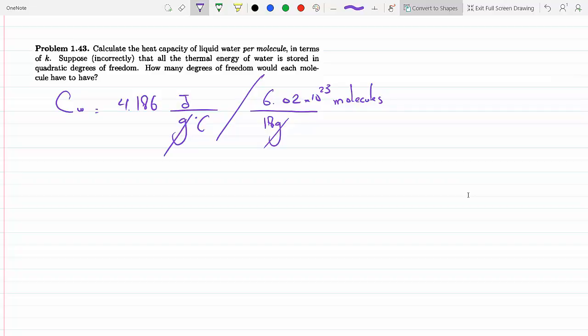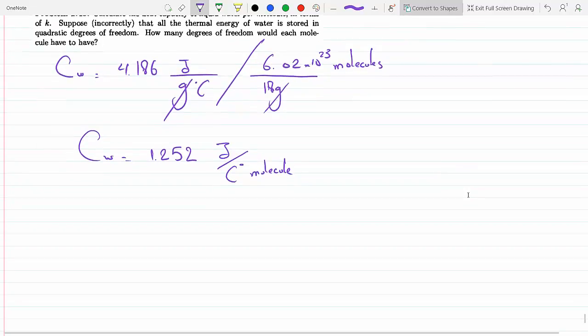Plugging this into the calculator, we get C_w is 1.252, and the units are joules per Celsius molecule, per Celsius molecule. That's in one molecule of water.